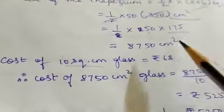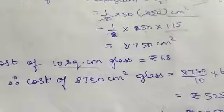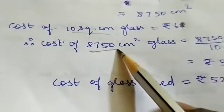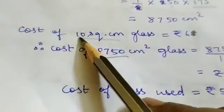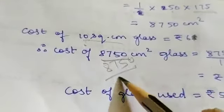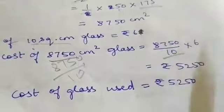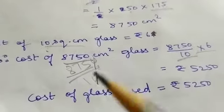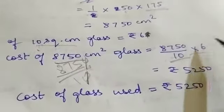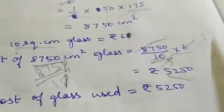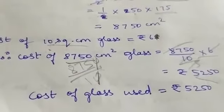Cost of 10 square centimeter glass is 6 rupees. Therefore cost of 8,750 cm² is: 8,750 divided by 10, then multiply by 6. Cancel the zeros, 875 into 6. If you calculate 875 divided by 10 into 6, it equals 5,250. So cost of the glass used for the table is Rs. 5,250.